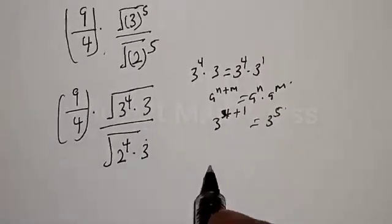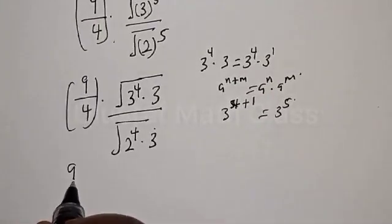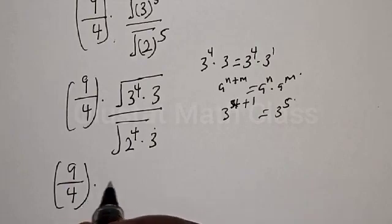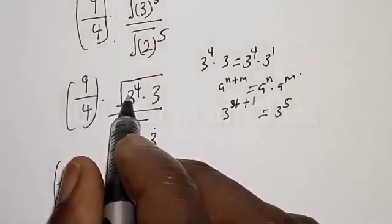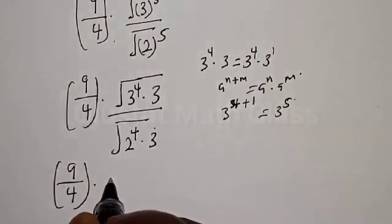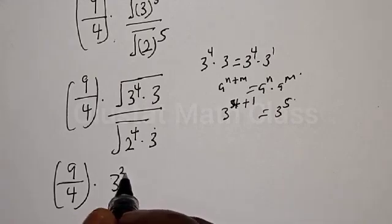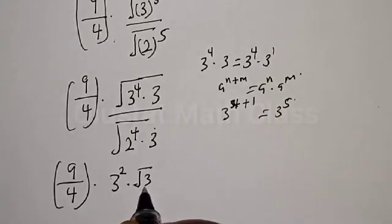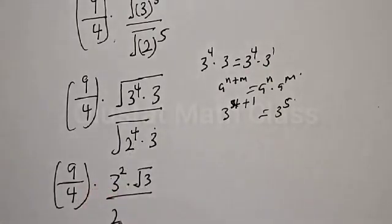So we have 9 divided by 4, multiplied by root 3 raised to the power 4, which is the same as 3 squared, multiplied by root 3 over root 2 raised to the power 4, which is the same as 2 squared.